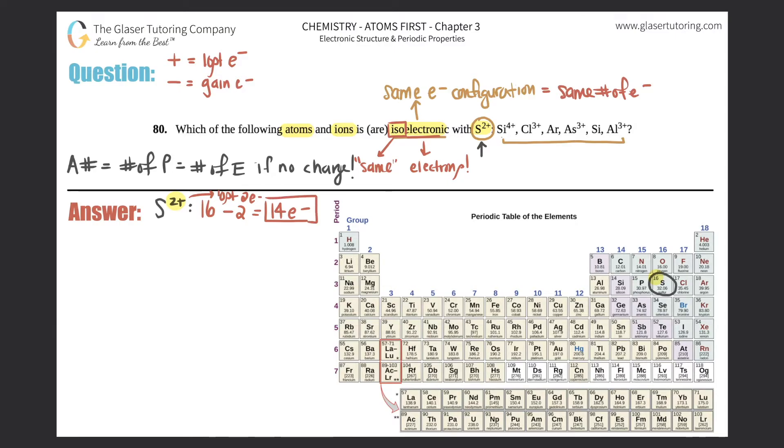If these six equal 14 electrons, then yes they would be isoelectronic. Let's start with the first one - silicon 4+. Silicon's over here and the atomic number is 14 for silicon, so it would be 14. Now it's telling us that it's a plus 4, so that means you lost four electrons, so you would minus 4 from here. 14 minus 4 is 10 electrons. That is not the same as 14 electrons that we want, so silicon 4+ is out. That means it's just not isoelectronic.